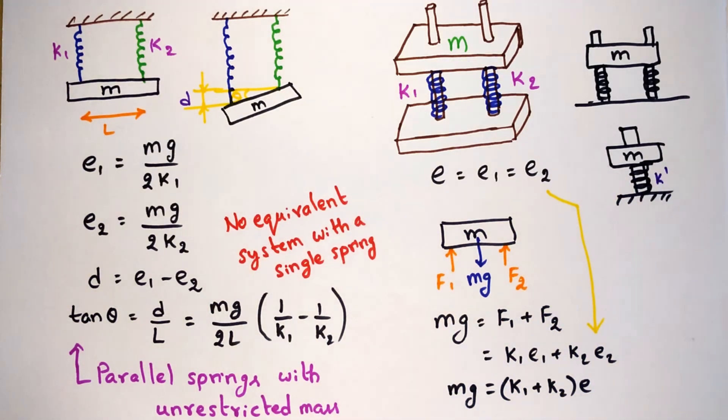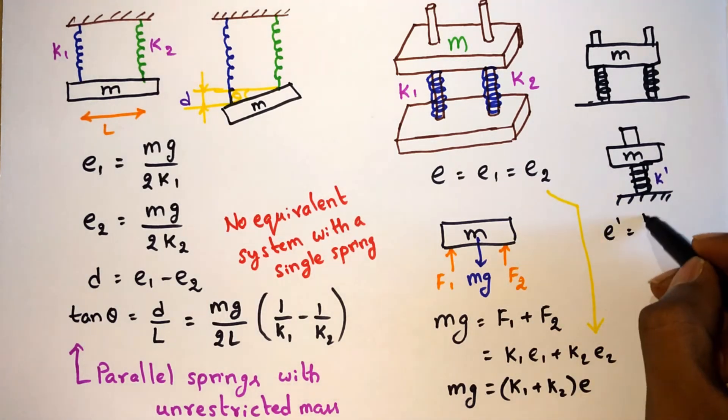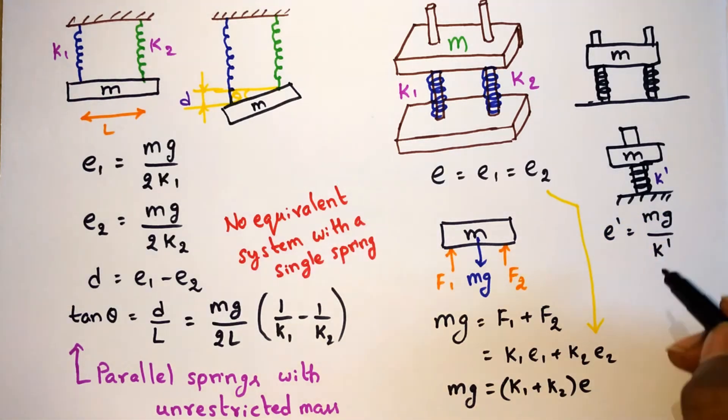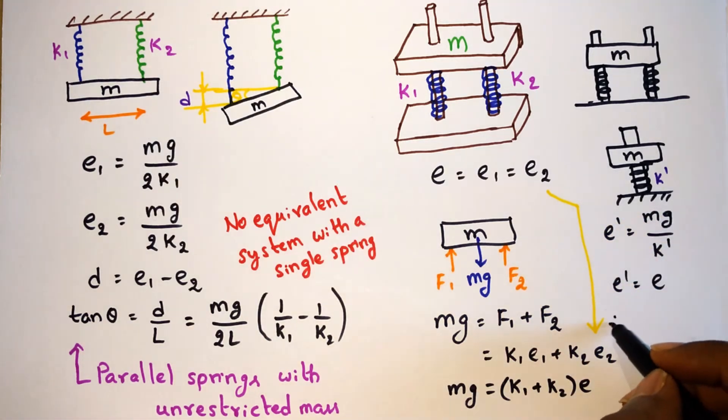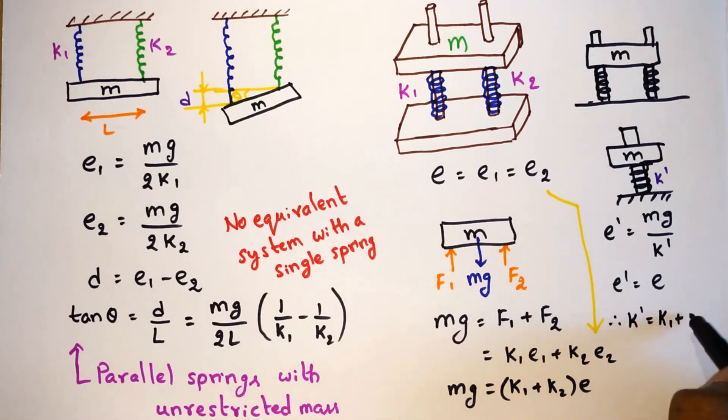If the compression of the equivalent spring is E', then E' equals Mg by k'. And since E' equals E, therefore k' equals k1 plus k2.